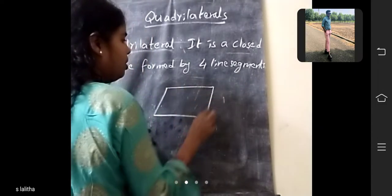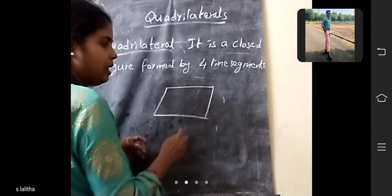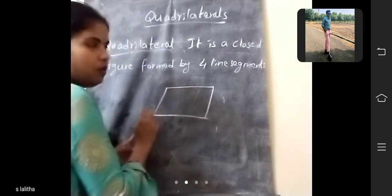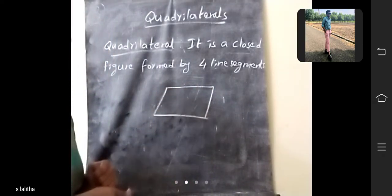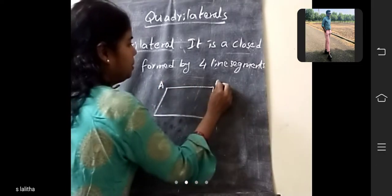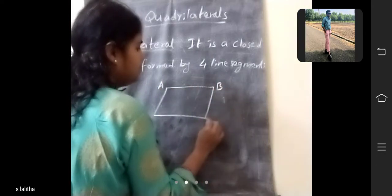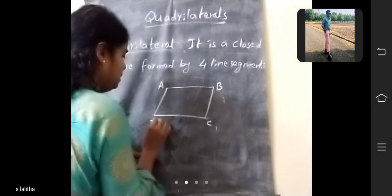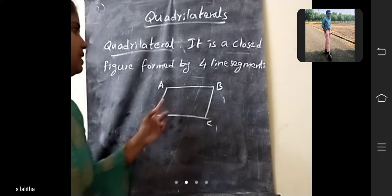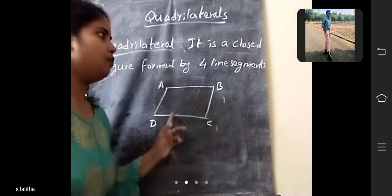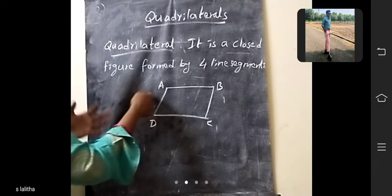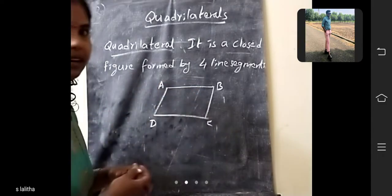Here, how many sides are there? 1, 2, 3, 4 — 4 line segments formed. It is a quadrilateral. A, B, C, D. It is a closed figure formed by 4 line segments. So how many sides for a quadrilateral?